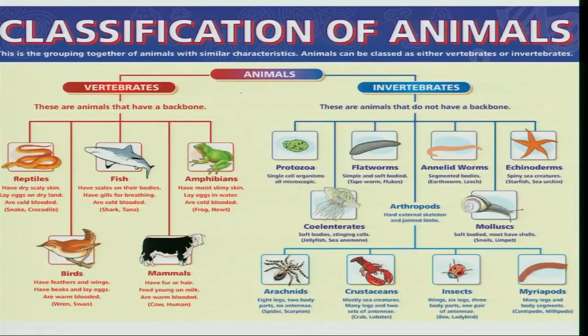Now, what exactly is the position of insects in the animal kingdom? The animal kingdom can be broadly categorized as vertebrates and invertebrates. Insects, which come under the phylum Arthropoda, mainly belong to the invertebrate group, and share this phylum with other sister groups such as arachnids, crustaceans, and myriapods.